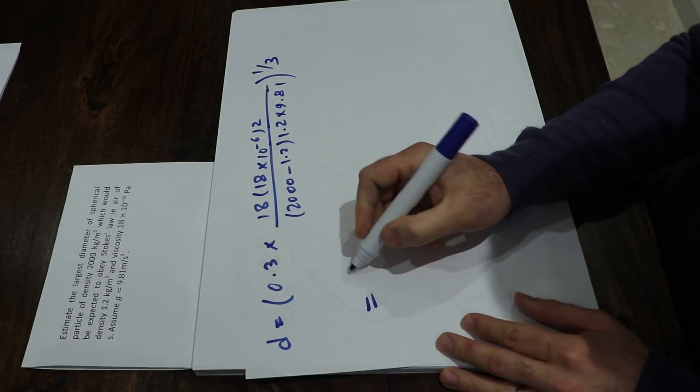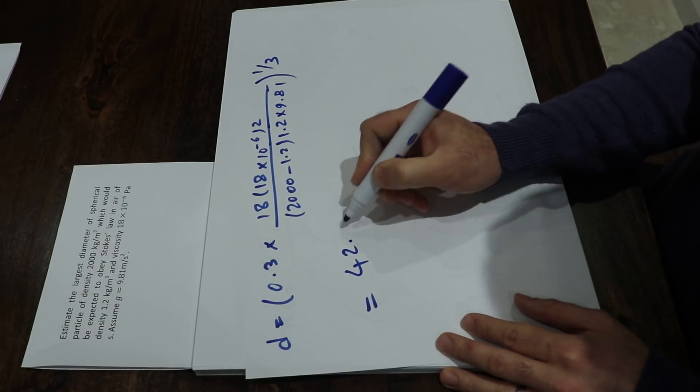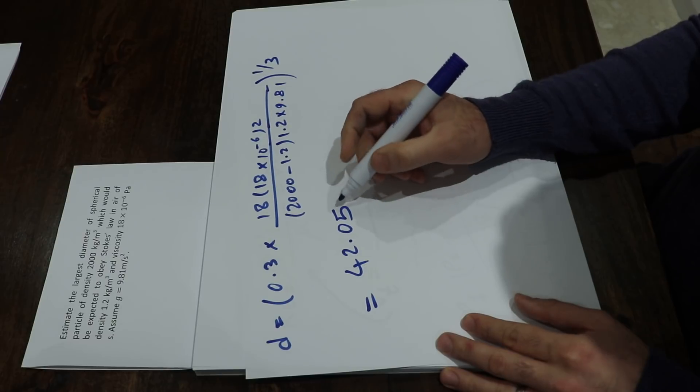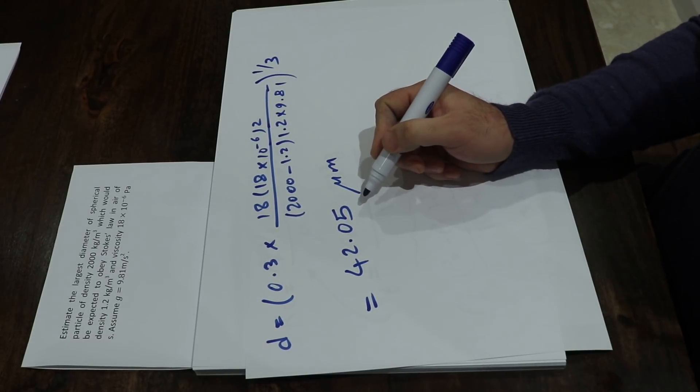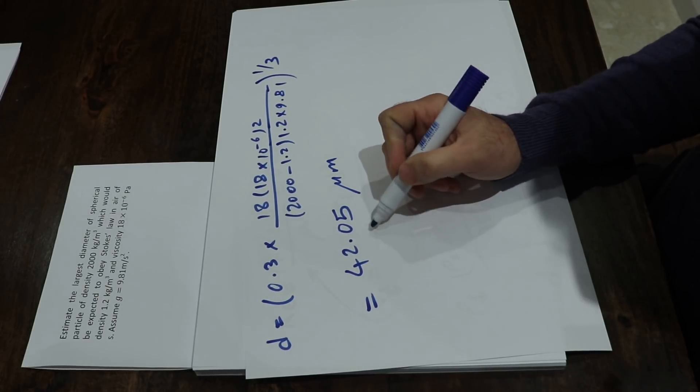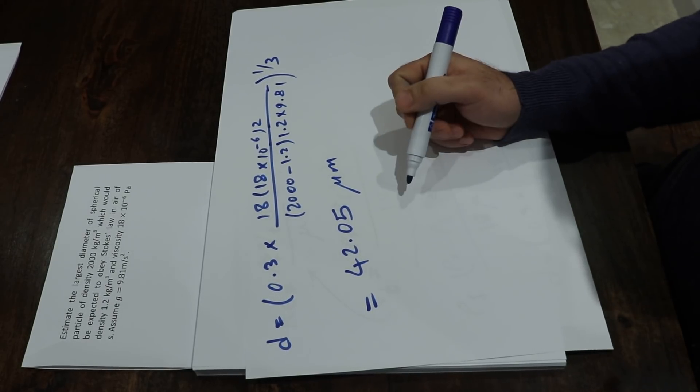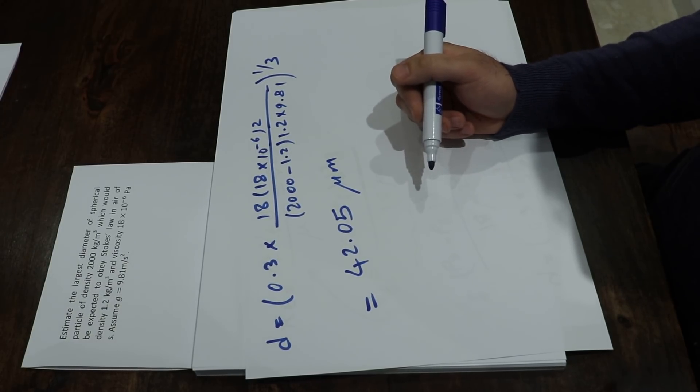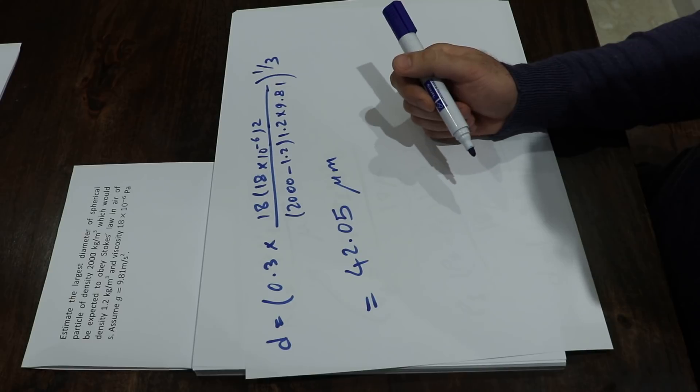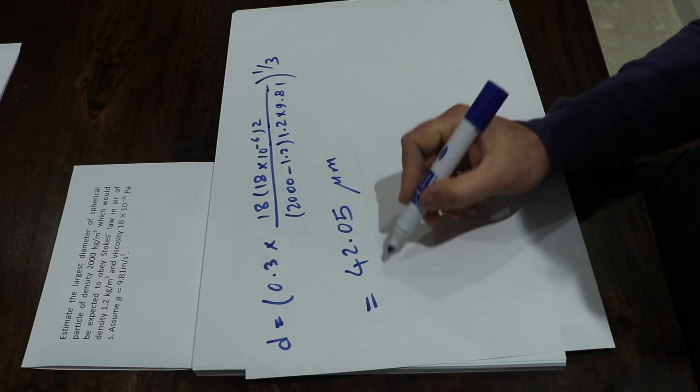If you do the calculation, you get d equal to 42.05 micrometers. That is the largest diameter of the spherical particle that can follow the Stokes regime with the given boundary conditions in this question. That is the final answer.